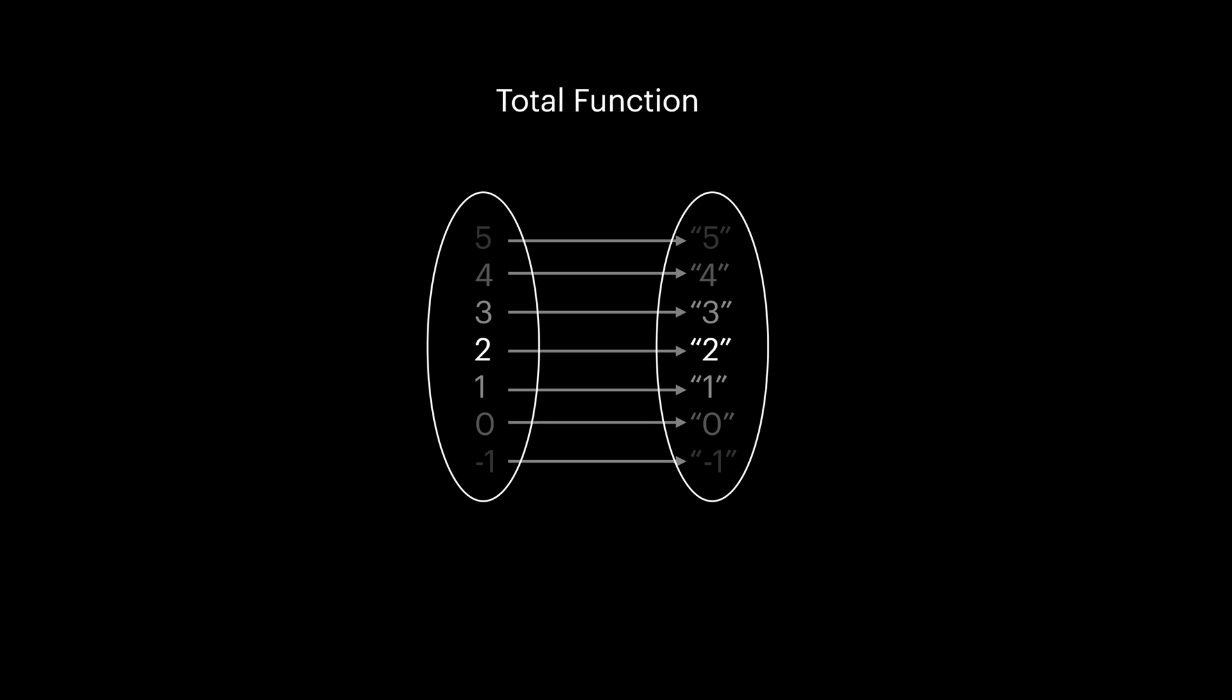Functions in functional programming are a bit more restrictive than regular functions that we use daily, for example JavaScript functions. The first limitation is what we just explained: in functional programming, functions are defined for all their input universe values, or in other words, functions in functional programming are always total functions.